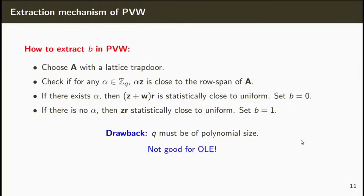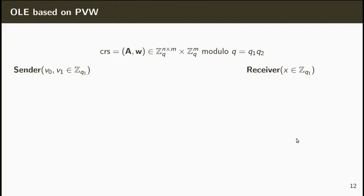However, there's a drawback. In the proof, Q must be of polynomial size because the reduction needs to go through all values of Q. This is not good for OLE because this would restrict the functionality to fields of polynomial size. Instead, we want to perform OLE over any field, even with superpolynomial size.